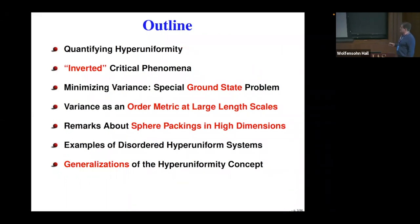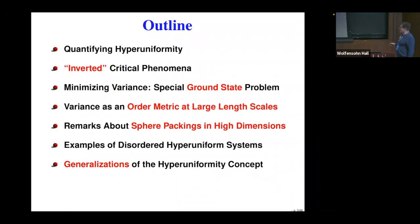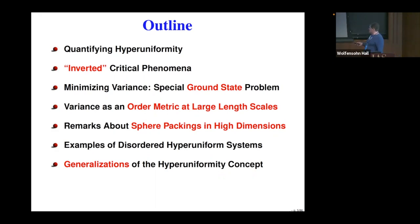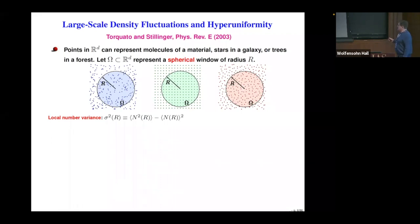The outline for the rest of the talk: I'll get a bit more quantitative about what we mean by hyperuniformity; I'll talk about it as an inverted critical phenomenon; I'll discuss how minimizing variance is a special type of ground state; I'll cover the variance as an order metric at large length scales; I'll digress on sphere packings in high dimensions; I'll give various examples of disordered hyperuniform systems in various space dimensions. And then I'll end with some generalizations beyond point patterns. This started with a simple paper asking fundamental questions about large-scale density fluctuations with Frank Stillinger in 2003.